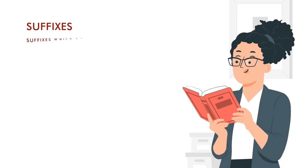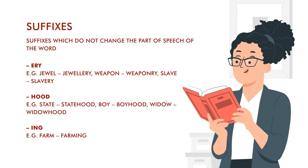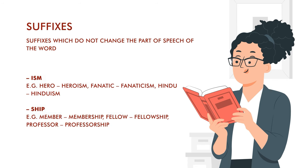Then suffixes — there are two types. Suffixes which change the part of speech of the word, and those that do not. Those which do not change the part of speech include: 'bag' → 'baggage,' 'bond' → 'bondage,' 'post' → 'postage' — all nouns. 'King' → 'kingdom,' 'star' → 'stardom.' 'Jewel' → 'jewellery,' 'weapon' → 'weaponry,' 'slave' → 'slavery.' 'State' → 'statehood,' 'boy' → 'boyhood.' 'Hero' → 'heroism,' 'member' → 'membership,' 'fellow' → 'fellowship.' These are suffixes which do not change the part of speech of the word.